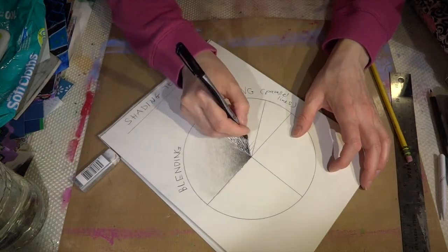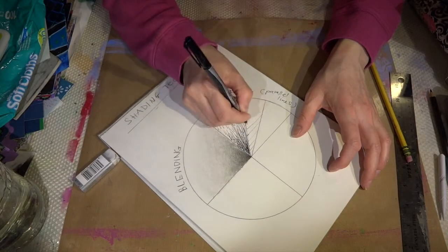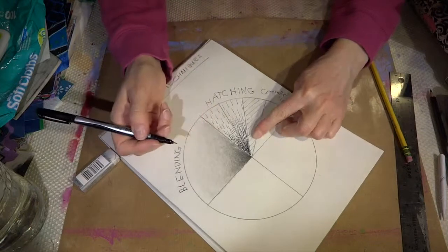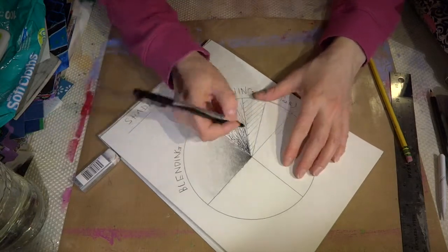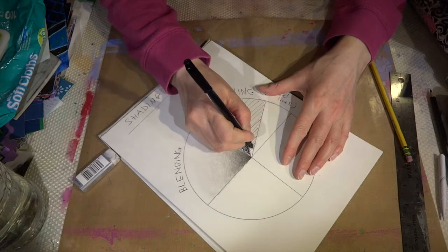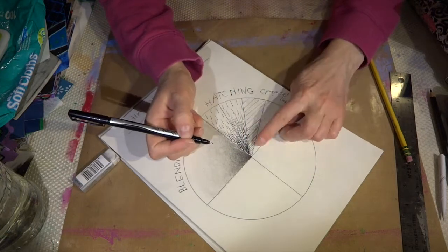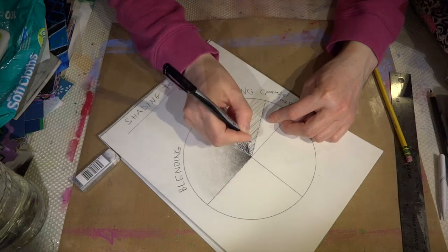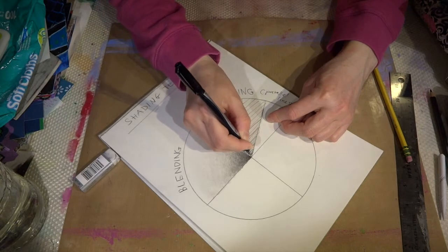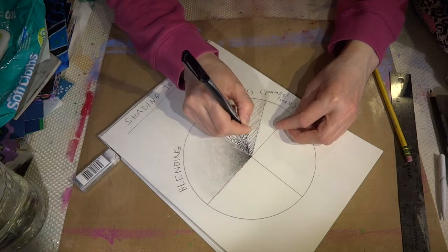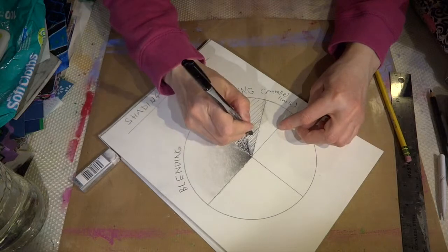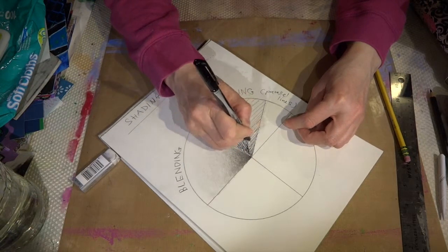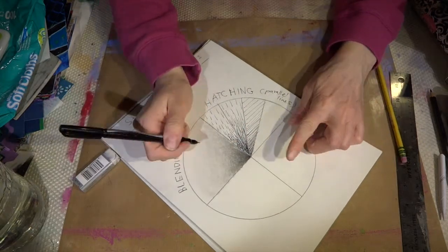The whole object is shaded with lines going in one direction and then where you want to have a darker value, you start splitting the distance between the lines and again getting them, making them closer and closer. Also if you press the marker harder, you will have a darker line. If you don't press it, you will have a lighter line.